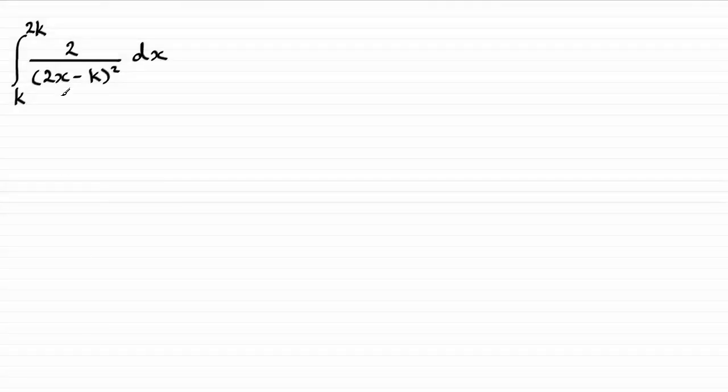So for this question, we're asked to integrate 2 over 2x minus k all squared. We're integrating it with respect to x with limits that go from x equals k to x equals 2k. So how do we do something like this?